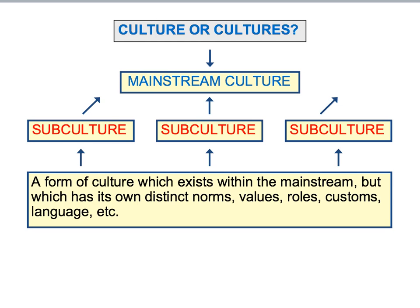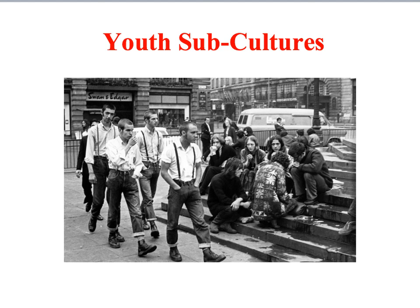So far this presentation has implied that there's a mainstream culture that everybody shares within society. Of course we know that isn't the case — our society is in fact very culturally diverse, and there are particular groups within society that might have their own distinctive norms, values, roles and customs different from the mainstream culture. The term generally used in sociology to describe these groups with their own distinctive norms and values is subcultures. For example, later in the course we look at youth subcultures that have developed their own distinctive dress, ways of speaking, and norms and values that make them stand out from mainstream culture.